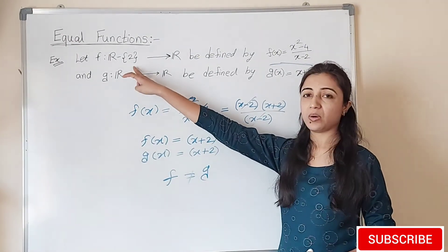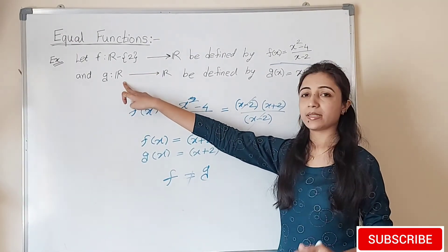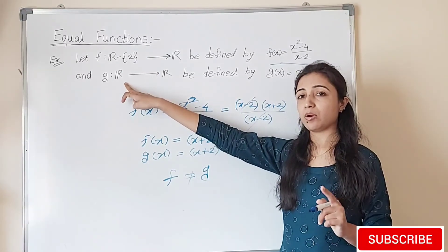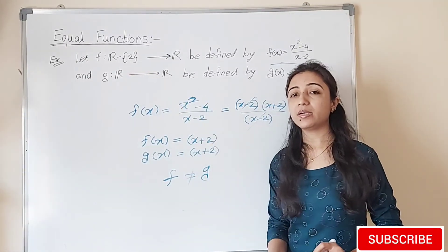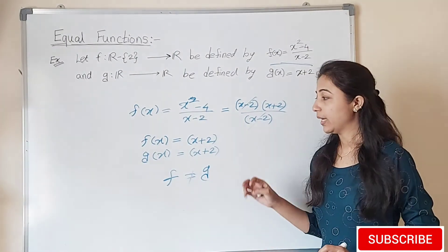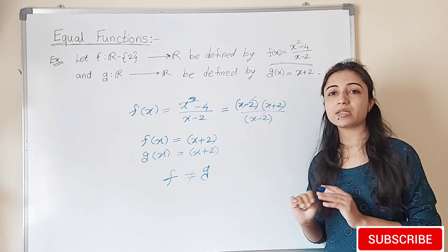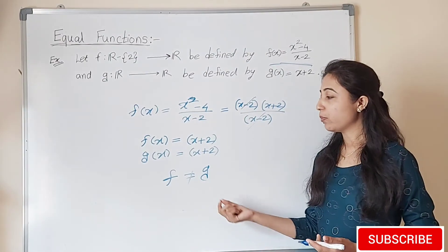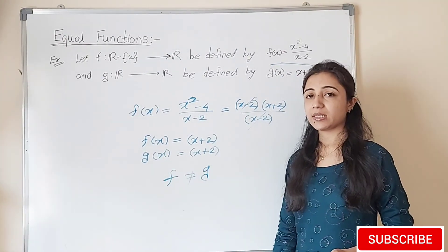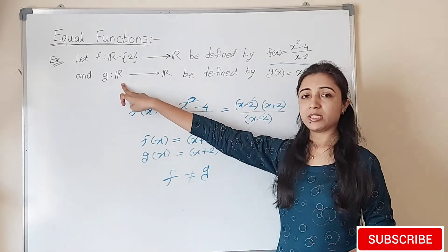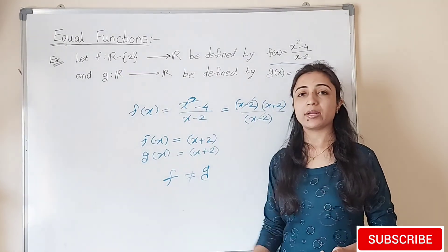g exists for all real numbers, but f is not defined at point 2. If a function is not defined, then its corresponding image doesn't exist. So at point 2, we cannot check equality. Point 2 is in the domain of g but not in the domain of f.